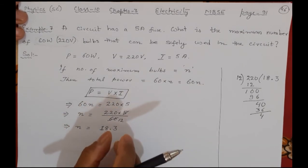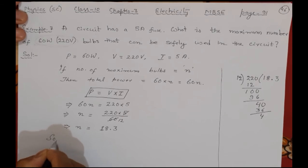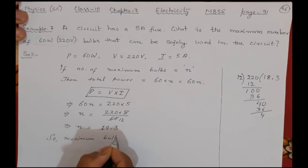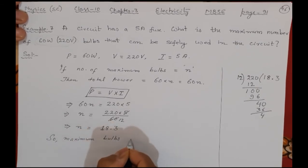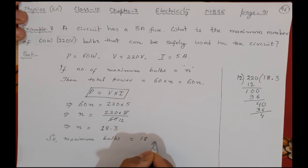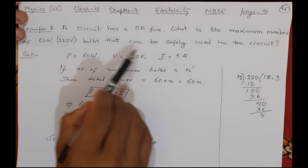You cannot use 18 and half bulb. So maximum bulbs will be 18. Don't write any unit. Number, how many? So 19 means it will be more. 18 means it will be just allowed.